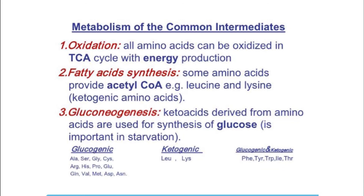Glucogenic amino acids are used to help synthesize glucose, while ketogenic amino acids are used to synthesize lipids. All amino acids can be oxidized through the Krebs cycle for energy production. Some ketogenic amino acids, such as leucine and lysine, can go through fatty acid synthesis. Others support gluconeogenesis, especially during starvation — these include glucogenic amino acids such as alanine, serine, and glycine. A chart summarizing which amino acids are glucogenic, ketogenic, or both is also provided.